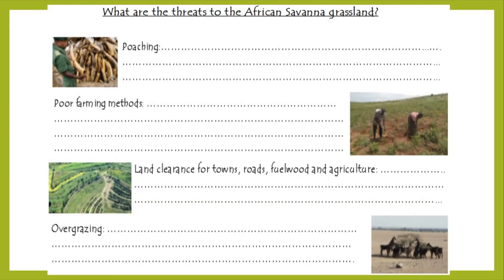As usual, when humans come along they tend to unbalance and upset what's going on in nature. What we're going to look at now is what are the threats to the African savannah grassland. Just like the rainforest, the African savannah is under threat from biodiversity loss and deforestation due to humans. You've got little images in your handout — cut and stick them alongside what we're going to write. Put the subheading: what are the threats to the African savannah grassland?